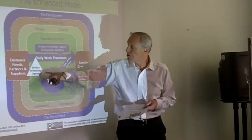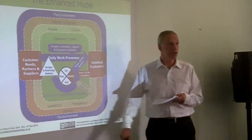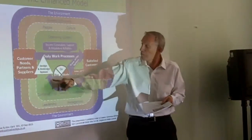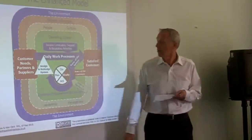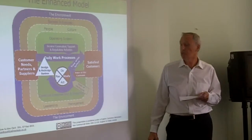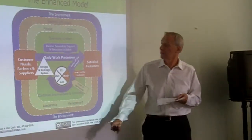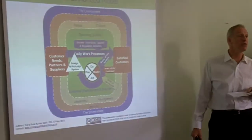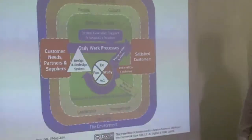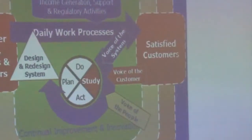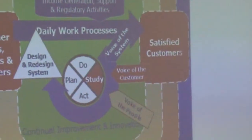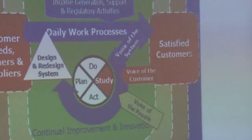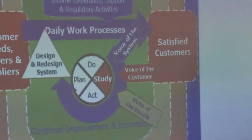We've also added the triangle shape at the end to explicitly show that the outcome of continual improvement and innovation is the design and redesign of the system itself. These aren't one-off quick fixes — this is to change the operating system itself.